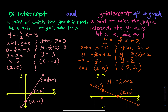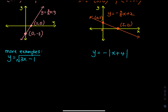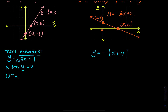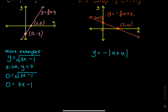Let's do more examples. For this equation, to find the x-intercept, let y equal to 0: 0 = √(3x minus 1). Squaring both sides gives 0 = 3x minus 1, so x equals 1/3. The x-intercept is (1/3, 0).